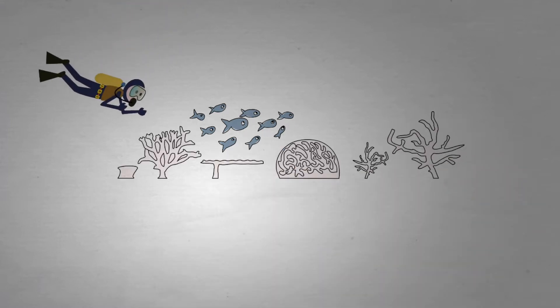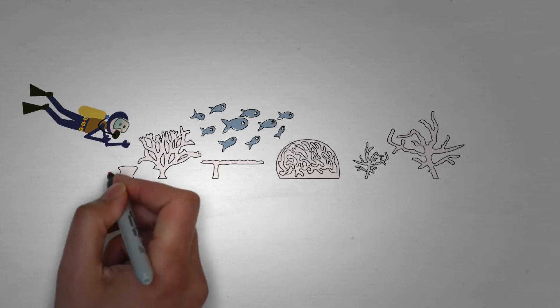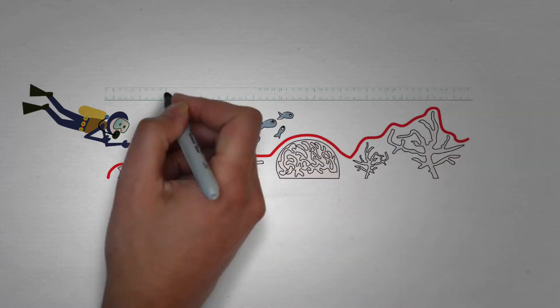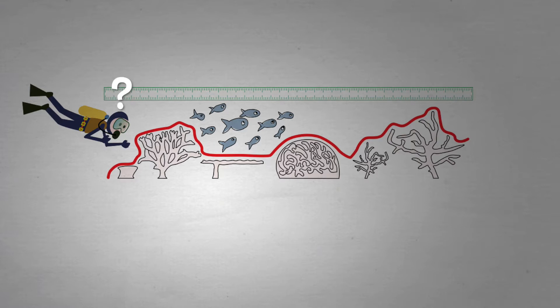It's traditionally measured in situ by divers using chains and tape measures. A diver typically lays a known length of chain over the reef and then uses a tape measure to work out the ratio of the chain's length to the distance between the endpoints to give an estimate of structural complexity. This process is labour-intensive and relies upon a 1D measure to provide an estimate of 3D complexity, which is not very reliable. As a result, the measurements are not easily repeatable and can cause damage to the reef and put humans at risk.